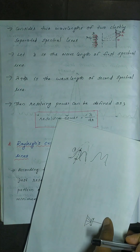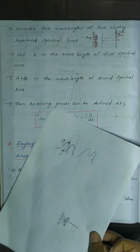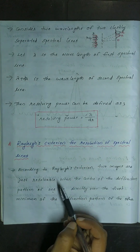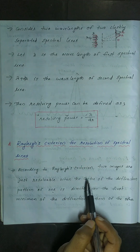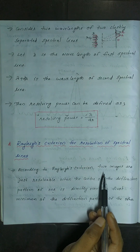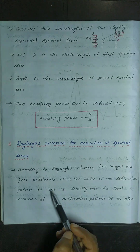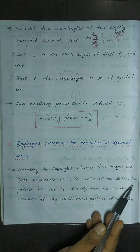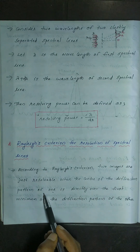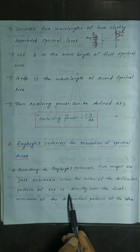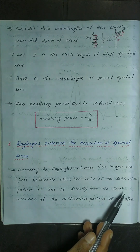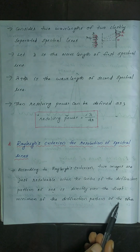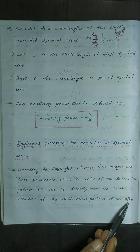This is Rayleigh's criterion. According to Rayleigh's criterion, two images are just resolvable when the center of the diffraction pattern of one is directly over the first minimum of the diffraction pattern of the other. It is clear.